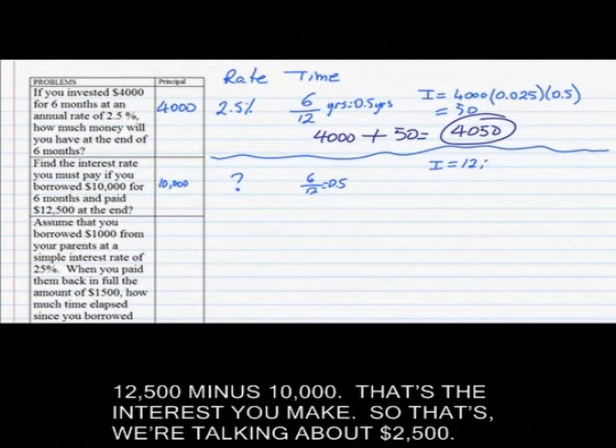You need to find out how much interest you are going to make. The interest is going to be the difference between how much money you have at the end minus the initial amount. So your I is going to be 12,500 minus 10,000. That's the interest you made. So we are talking about $2,500.